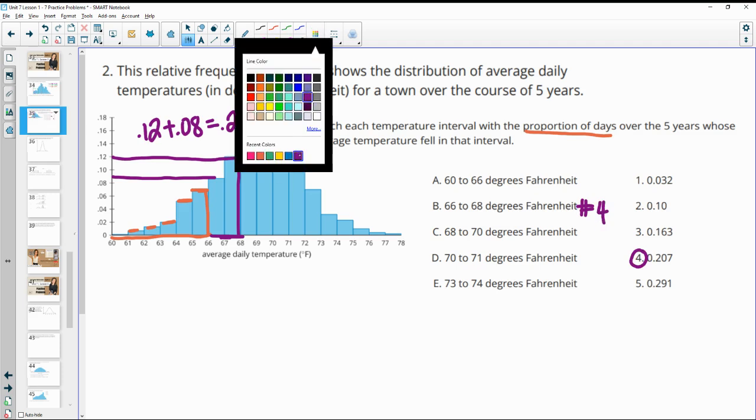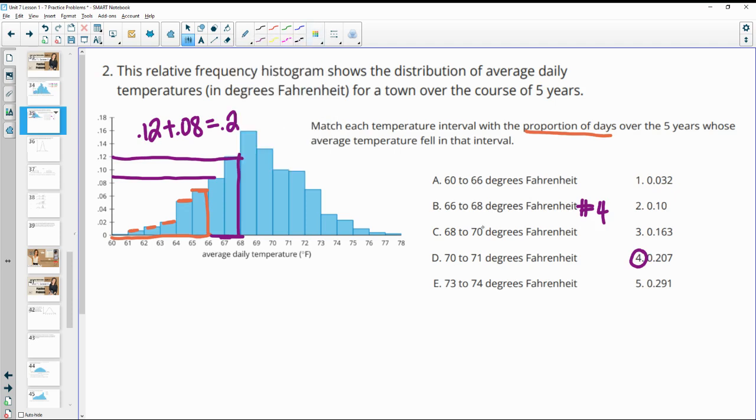68 to 70, so now we're here. These two: this one looks like maybe 0.13 and this is like 0.15. So 0.15 and 0.13 is 0.28. If we look down the line at these, the only option that's around that is 0.291, so C is number five.